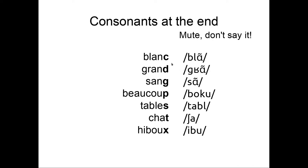There are seven consonants that you don't say when they are at the end. It's mute. Don't say it. The C, like in blanc. The D, like in grand. The G, like in sang. The P, like in beaucoup. The S, like in table. The T, like in chat. The X, like in hibou. Those seven consonants, when it's at the end of words, don't say it.